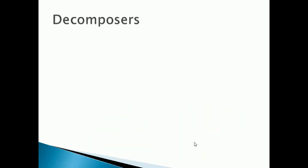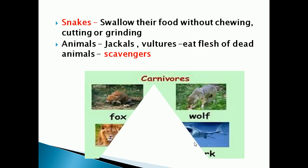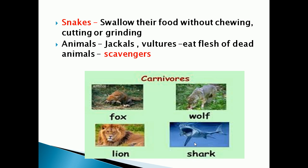Now we can see about omnivorous. Omni means all and vor means eat. So omnivorous animals are those that eat both plants and animals. Examples of omnivorous are bear, crow, dragon, and humans.